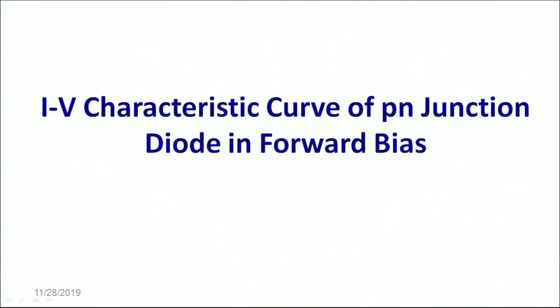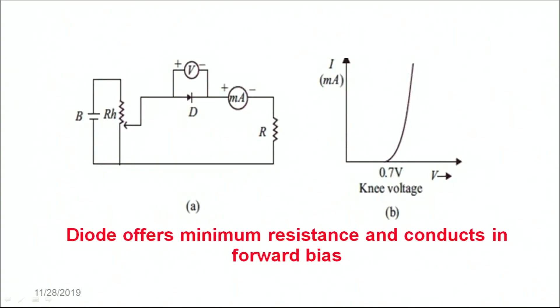Let's discuss the IV characteristic curve of a PN junction diode in forward bias. A forward bias means that the P type is connected to the positive terminal of the battery and the N type is connected to the negative terminal of the battery. This makes the diode in a forward bias. The connection of the diode in the forward bias is as shown here.